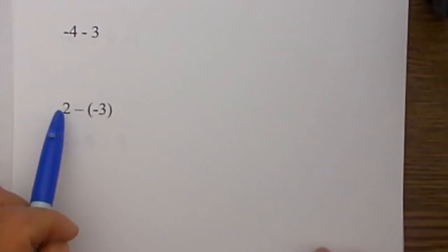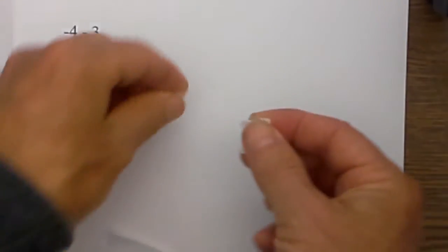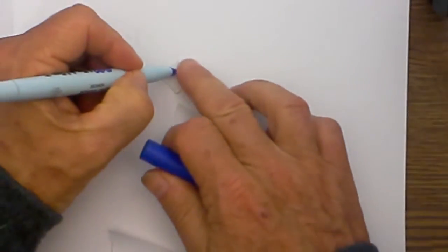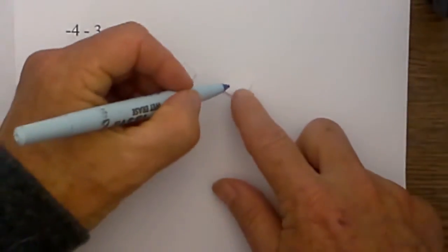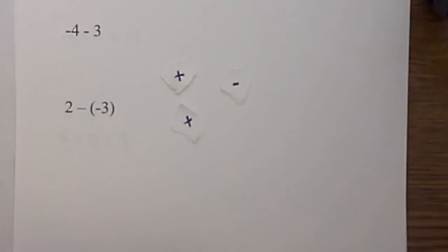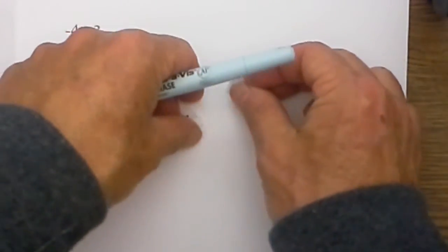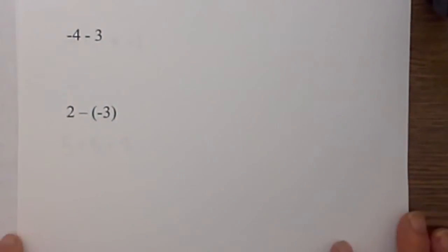Let's work this last example: two minus a negative three. Before I get started — if you like using counters and you are completing a test, you could literally get a sheet of paper, tear it, write a positive on one piece and a negative on the other, and use those as homemade counters. You can make some very quickly and use that.